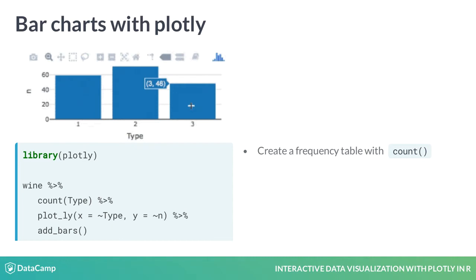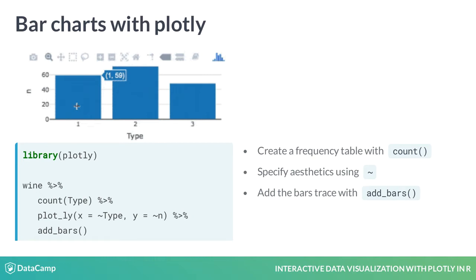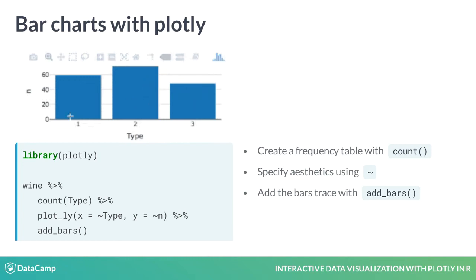The second piece is the mapping of the variables in the dataset to aesthetics in the graph. Here, we specify the mappings using tildes: x equals tilde type, y equals tilde n, telling the plot which variable defines each aesthetic. Third, we specify the plot type by adding a trace, similar to how we added geometry in ggplot2. To create a bar chart, we add the pipe operator %% after the plot_ly base layer and specify add_bars.